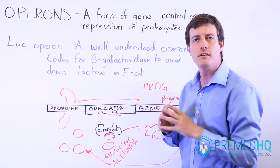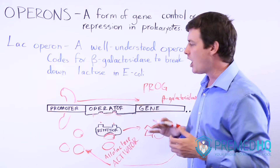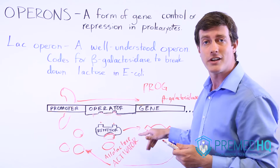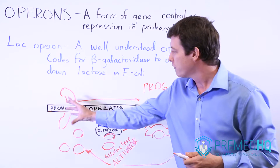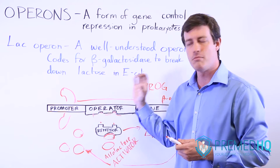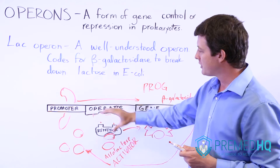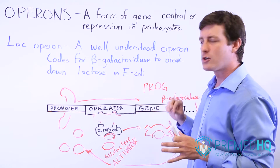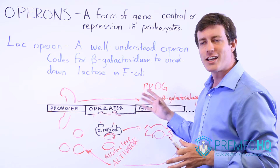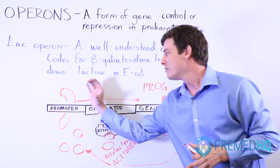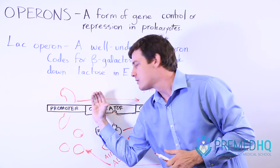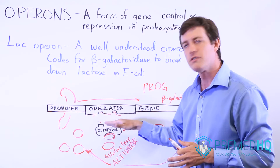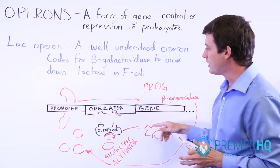An operon is this entire structure — the whole PROG plus potentially an activator. The promoter region is where the polymerase binds. The operator controls whether the polymerase is able to transcribe or whether it will be blocked by a repressor in its native form. And then the gene itself.